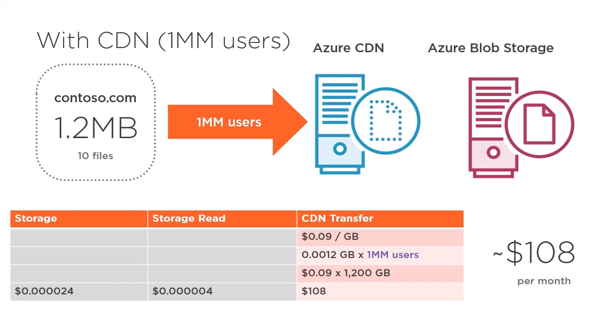Now, if we were to increase the pricing tier of our storage account to zone-redundant storage or something higher than that, we'd pay more, but it would still be relatively lower overall. Walking through a scenario like this for your own workload might prove insightful, but once you're using these services, how can you report on these costs? In the next demo, we'll see just how to do that.